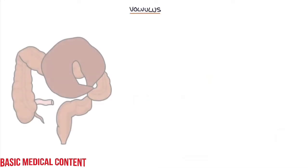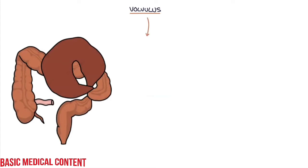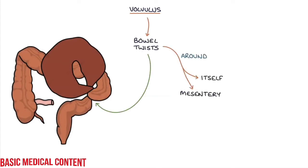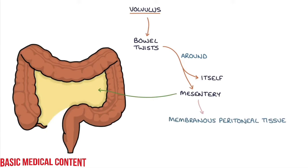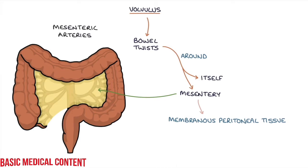In this video, I'm going to be going through volvulus. Volvulus is a condition where the bowel twists around itself and the mesentery that it's attached to. The mesentery is the membranous peritoneal tissue that creates a connection between the bowel and the posterior abdominal wall. The bowel gets its blood supply from the mesentery through the mesenteric arteries.